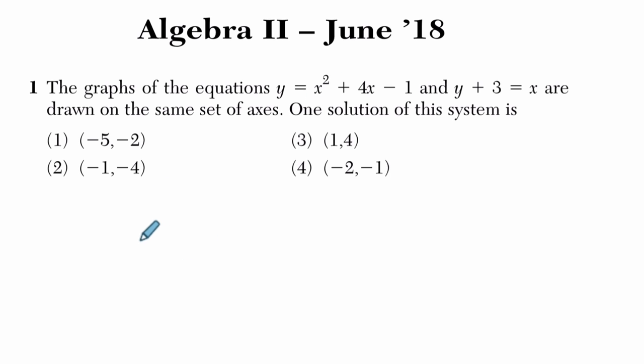So in both cases, these things are equal. So at some point, x squared plus 4x minus 1 will equal, we'll rewrite this equation right here, so it's subtract 3 on both sides, and we get y equals x minus 3. So at some point, x minus 3 will equal y, and x squared plus 4x minus 1 will also equal y, and those y's will be the same.